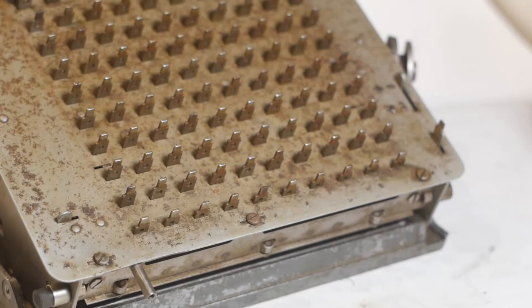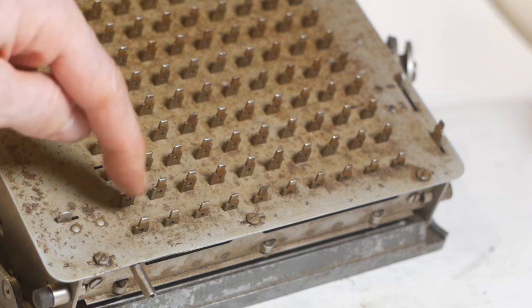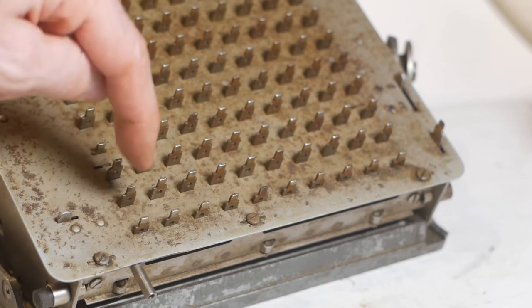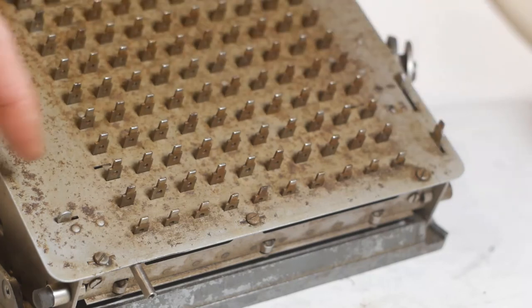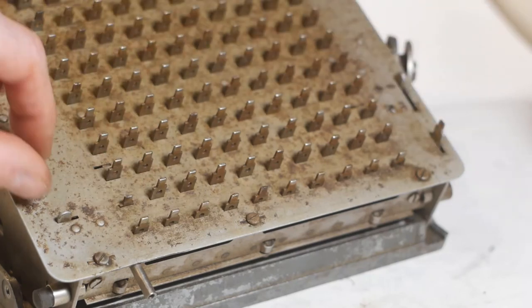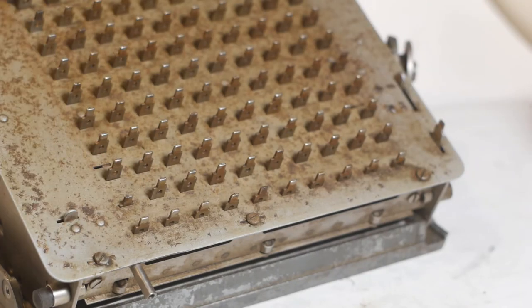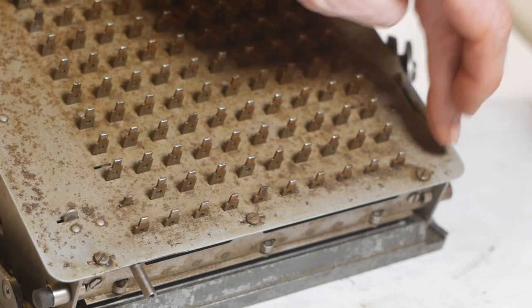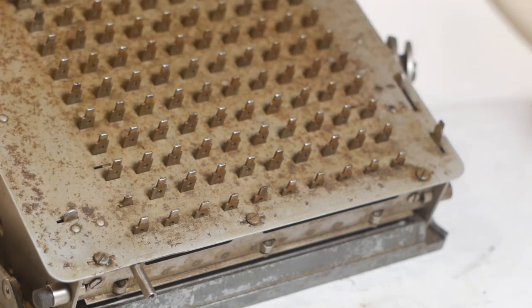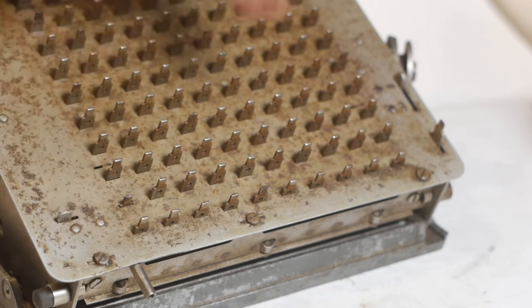Right the keyboard is now back together and predictably enough it was a bit of a struggle. Anyway the leftmost column is now latching as it should do and also if I press the number one key and slide the lever across the number one key stays down when I press the clear button to act as an addition counter and then when you release the lever and press the clear button again the number one pops back up.